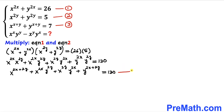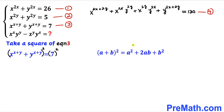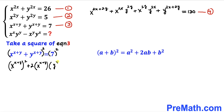Let's call this equation four. Next, let's focus on equation three and take the square of both sides. Applying the identity (a+b)² = a² + 2ab + b² to the left-hand side, we get: (x^(x+y))² + 2 × x^(x+y) × y^(x+y) + (y^(x+y))² = 49.